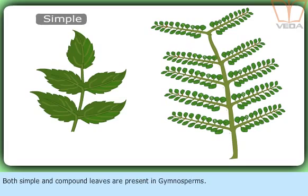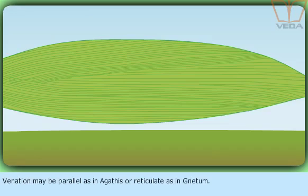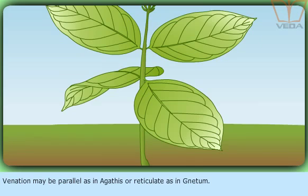Both simple and compound leaves are present in gymnosperms. Venation may be parallel as in Agathis or reticulate as in Gnetum.